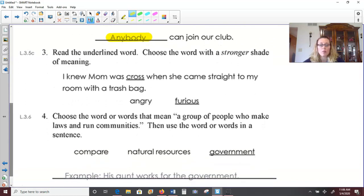Number three, read the underlined word. Choose the word with a stronger shade of meaning. I knew mom was cross when she came straight to my room with a trash bag. Well, cross is a pretty strong word to begin with. And it means to be angry or furious. But of the two choices, angry and furious, which one is a stronger word? Mom was angry or mom was furious? Furious. If mom was furious, look out.